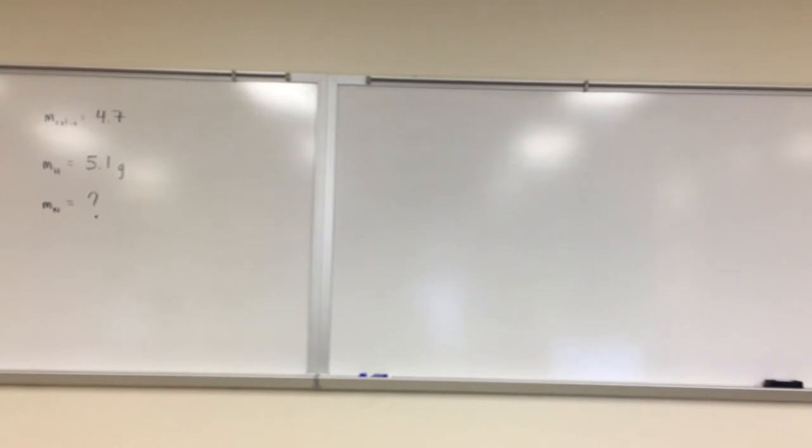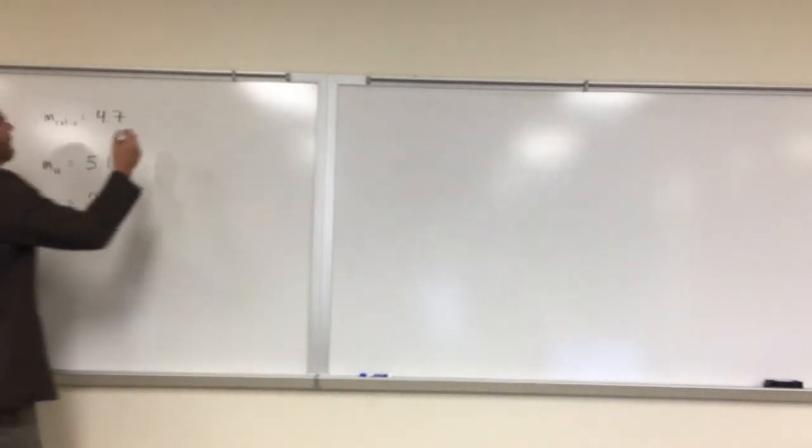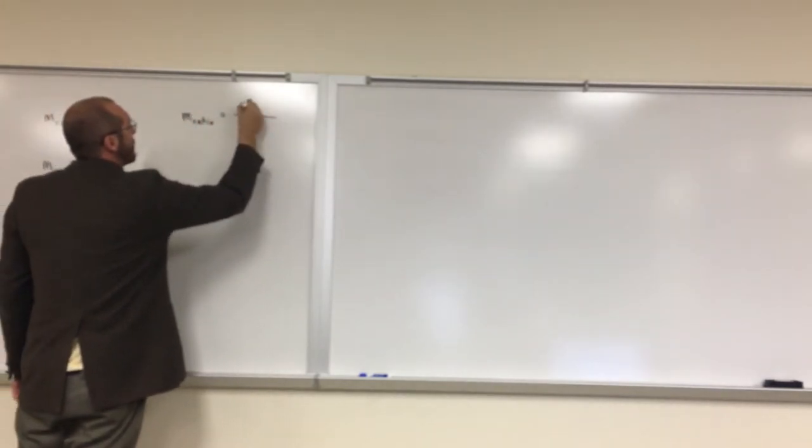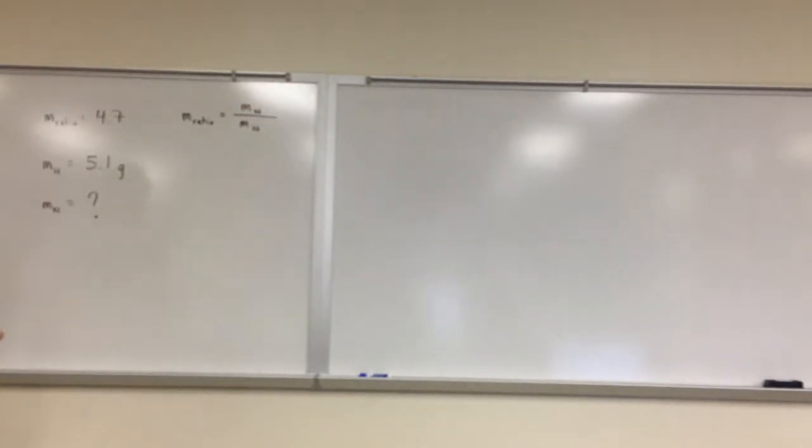What's the mass of nitrogen that's produced? In order to do this problem, we have to remember that it tells us the mass ratio that we want to use is the mass of nitrogen divided by the mass of hydrogen. So if we rearrange that equation, we should have everything we need to find that mass of nitrogen.